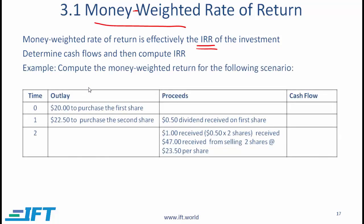Consider a simple scenario where at time 0 you buy a stock for $20 — that is your investment. Your initial cash outflow at time 0 is minus $20. At time period 1, one year later, you purchase a second share, which is a cash outflow, and a dividend of $0.50 is received, so the net cash outflow is $22. At the end of period 2, you receive $1 in dividends (50 cents per share) and $47 from selling the two shares, giving a total inflow of $48.